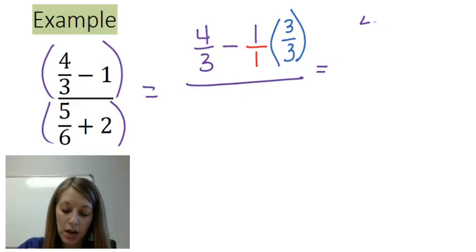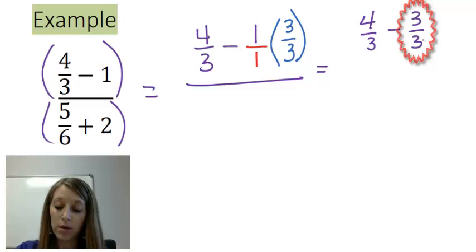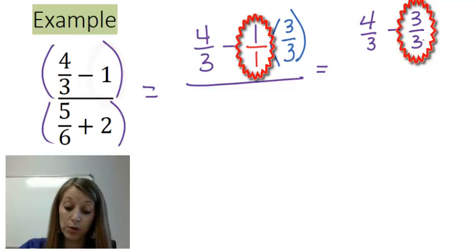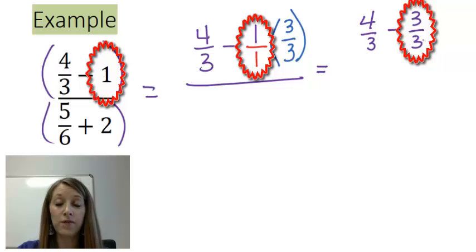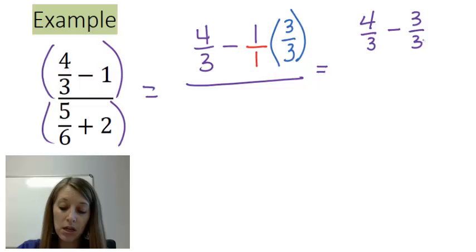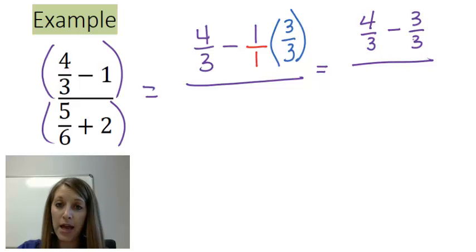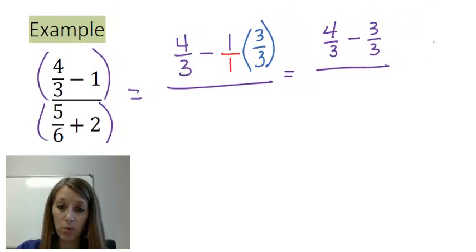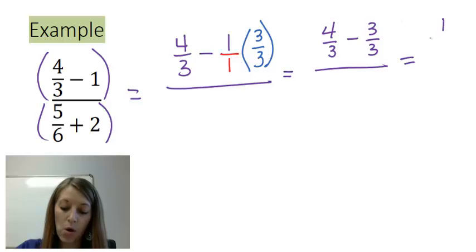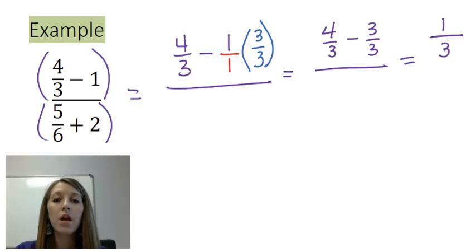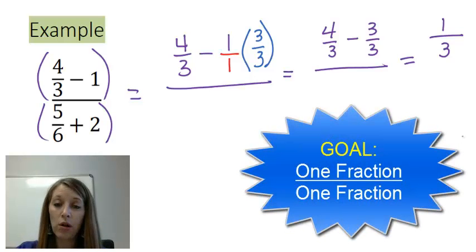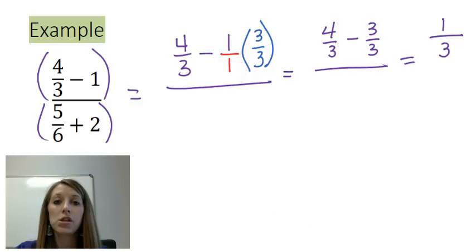To subtract fractions we need a common denominator. The LCD between 3 and 1 is just 3, so I multiply the second fraction by three over three. That gives me four-thirds minus three-thirds. Three-thirds reduces back to one, which checks out. But remember, I don't want to reduce yet — I want to combine these two fractions. Subtracting numerators: four minus three is one, over the LCD of three. So I now have one-third in the numerator. I suggest you pause and try finishing the problem from here.